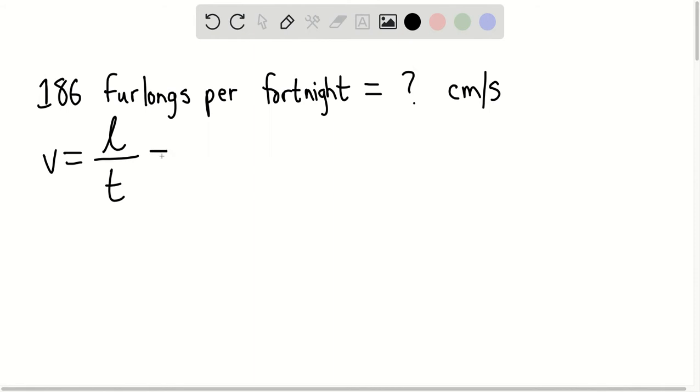And we can say that this would be equaling to 186 furlongs per every one fortnight.